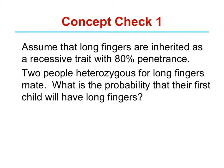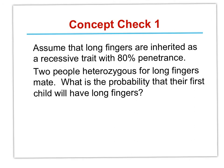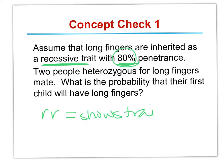Let's try a little problem. We assume that long fingers are inherited as a recessive trait with 80% penetrance. So what does that mean? That means of all the ones that are recessive — only 80% of them with the genotype little r, little r, actually show the trait. Normally if we have little r, little r, we would have long fingers, but in this case only 80% of individuals that are little r, little r show the trait.